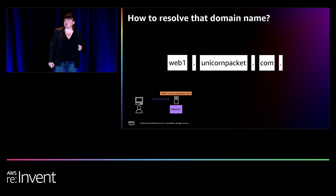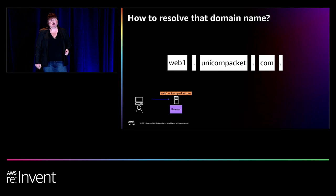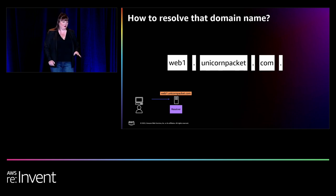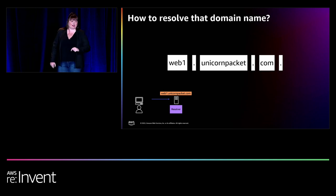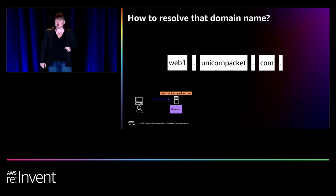I just mentioned cache — this is a great time to talk about time to live, TTL. TTL is a setting that dictates to that DNS resolver how long to cache that information before going out and requesting a new one. But we're going to tell a story where there's nothing in the cache. The resolver doesn't know about web1.unicornpacket.com, but it does know about root. So it forwards a request onto a root name server.